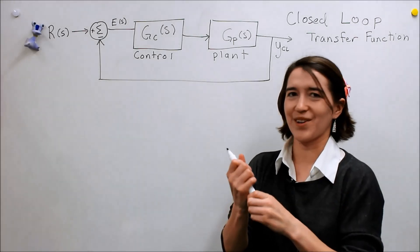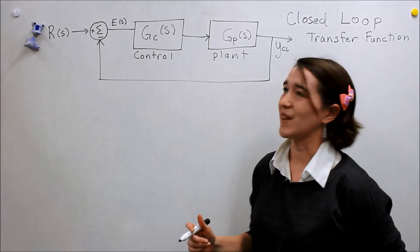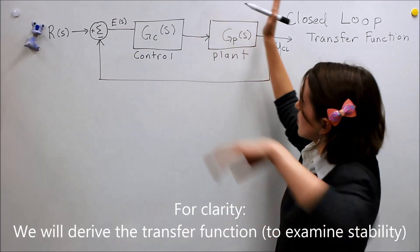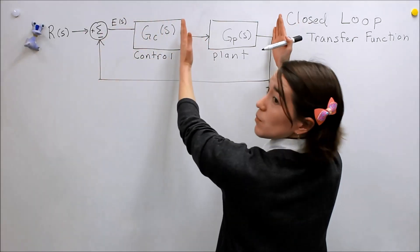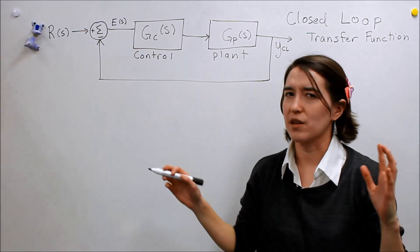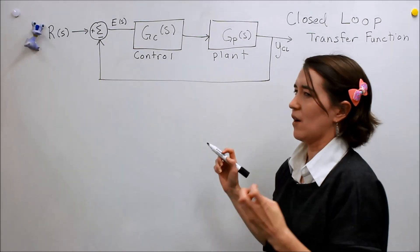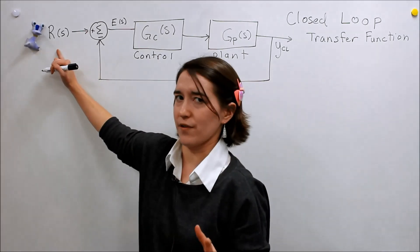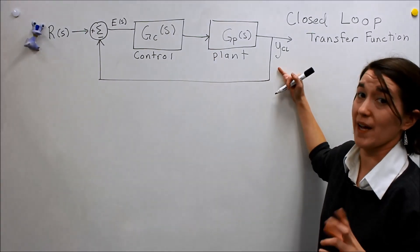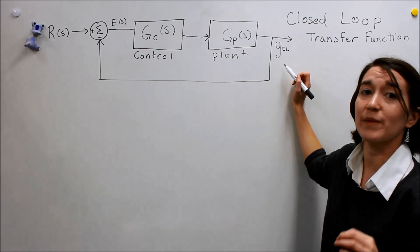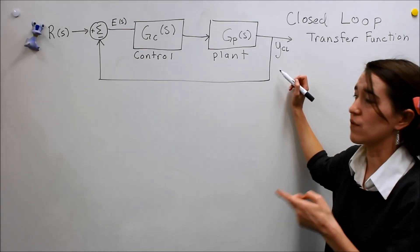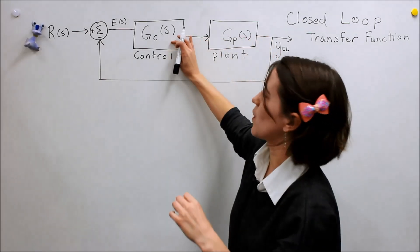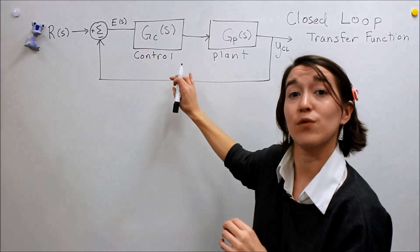We are going to derive the stability of this system. Before we were looking at the stability of the plant and we were looking at just the input and the output. But now with this closed-loop system, our inputs and outputs are actually a little bit different. Now our input is actually our reference and our output is our y, and I'm using y_cl here to mean closed-loop.